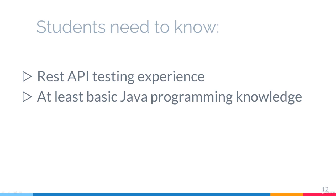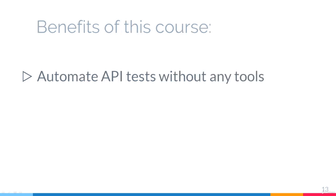If you took my Selenium courses, then you will have enough knowledge of Java for this course. At the end of this course, you should have enough knowledge to start automating REST APIs in your current company without any third-party tools like Postman or SoapUI. REST Assured is a great library that gives you total freedom in the way you want to write your code.